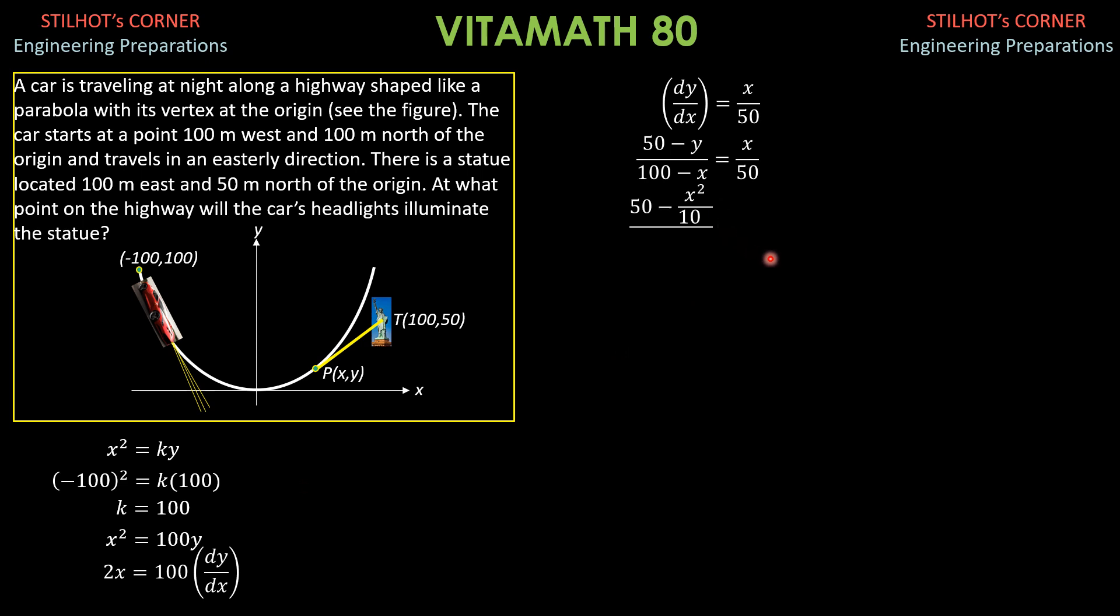So, 50 minus x squared over 100, all over 100 minus x equals x over 50. Cross multiply, 50 times 50 is 2,500. Then minus x squared over 2 equals 100x minus x squared. So, transposing negative x squared to the left, it becomes positive x squared minus x squared over 2. So, x squared over 2.